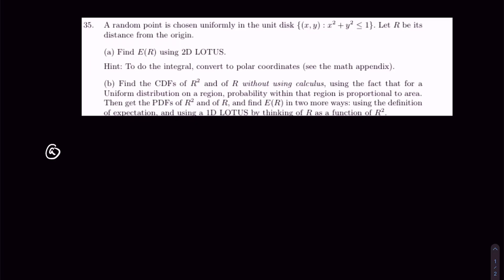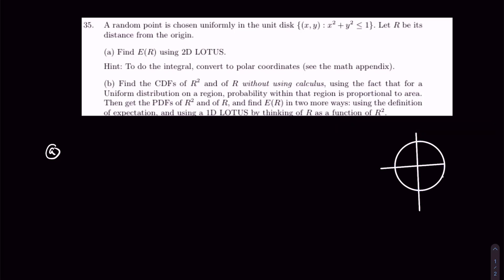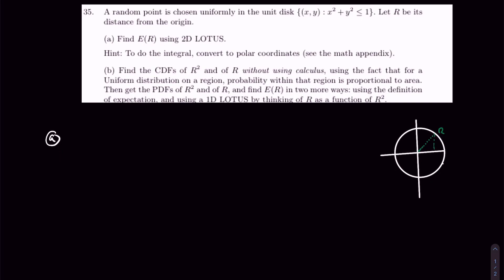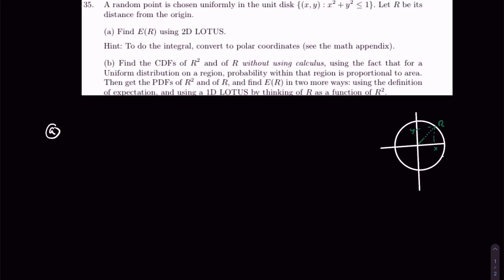Let's see what we are dealing with here. We have a random disk — let's just draw this out. We have the random variable R being the radius here, and then X is this variable and Y is that variable there.